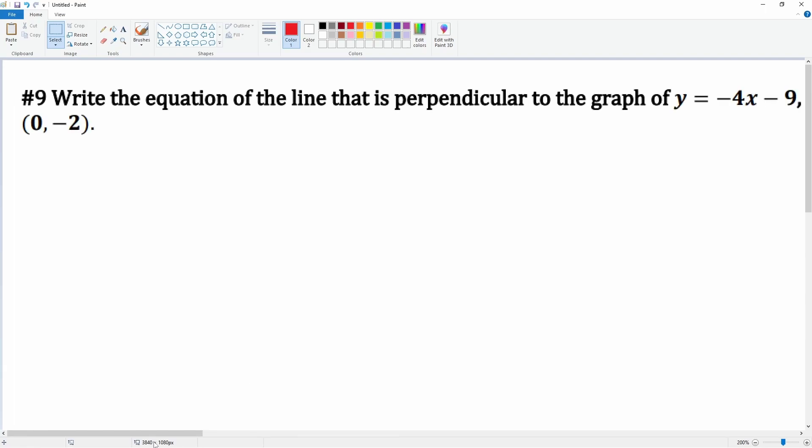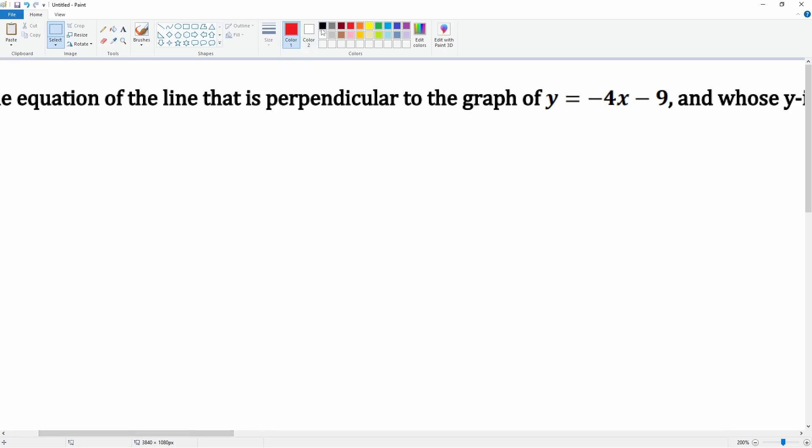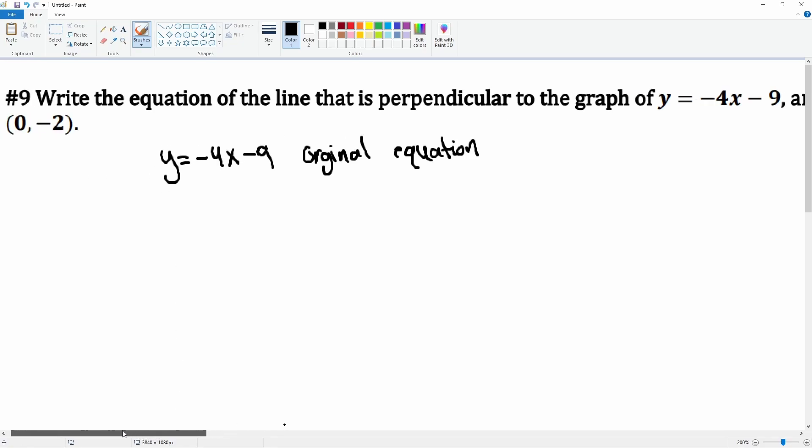whose y-intercept is 0, negative 2. So we have this equation here. This is our original equation: y is equal to negative 4x minus 9. That's what we have.